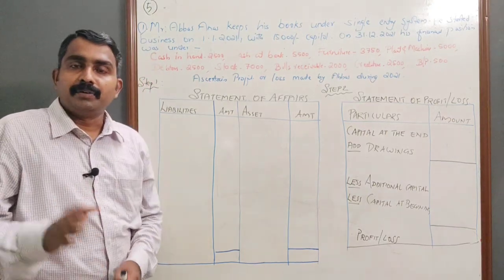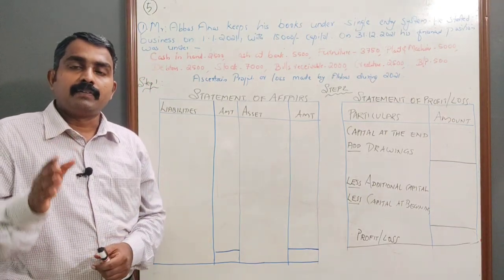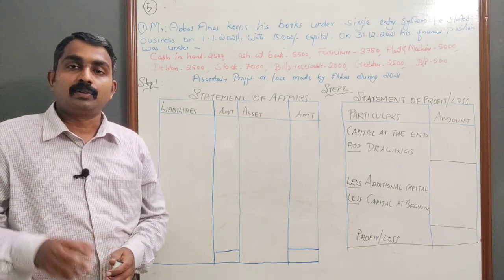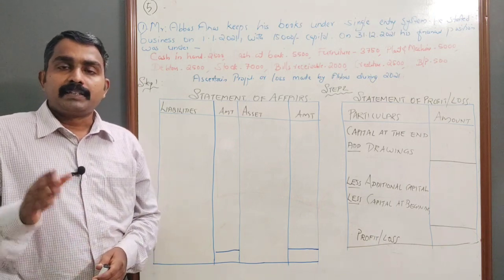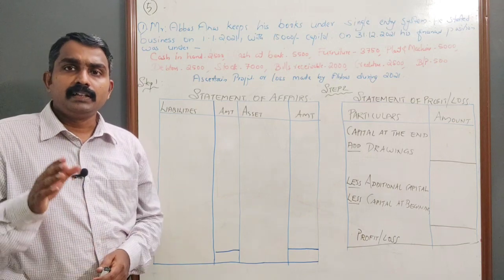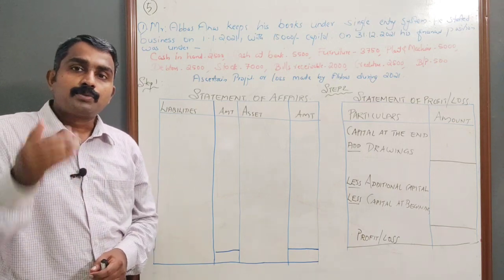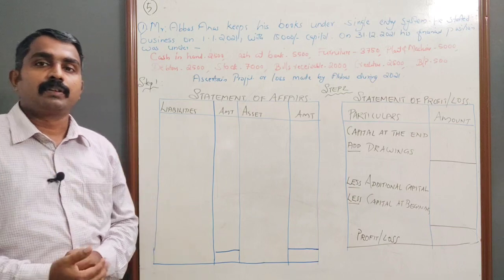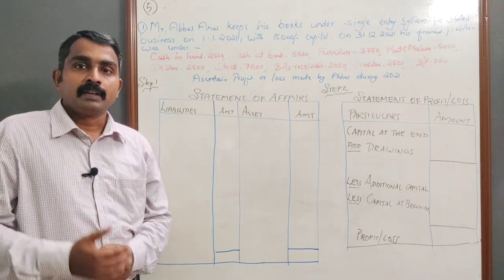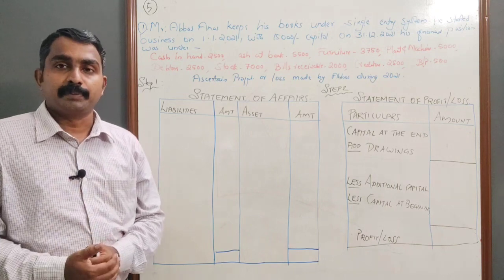Hello dear students, welcome to a new online class. We are discussing chapter 11 plus one accountancy — accounts from incomplete records or single entry — and you are watching the fifth class of this chapter. In this session we will discuss how to find out the profit or loss of an organization which is following a single entry system, by using the first method: the statement of affairs method.